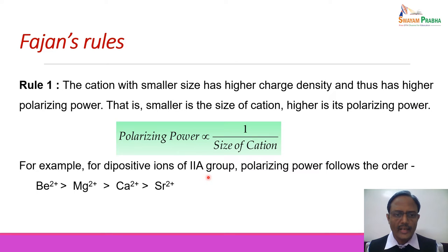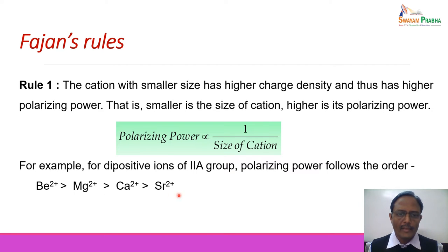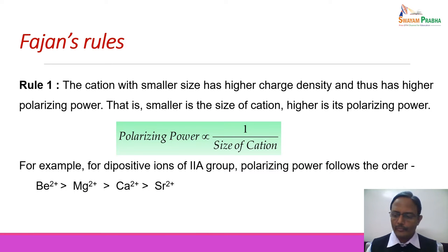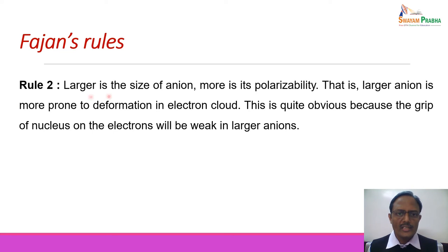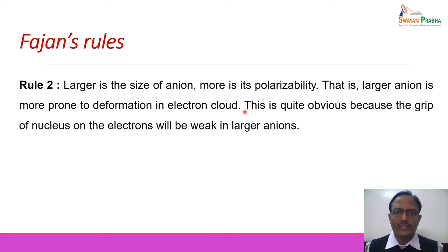The first rule states that a cation with smaller size has higher charge density and thus higher polarizing power — smaller the cation, higher the polarizing power. Considering the second A group dipositive ions Be²⁺, Mg²⁺, Ca²⁺, Sr²⁺ — all have equal charge but size increases from beryllium to strontium. As the size of the cation increases, the polarizing power decreases from Be²⁺ to Sr²⁺. The second rule states that larger the anion, more is its polarizability, because the nuclear grip on electrons is weaker in larger anions.